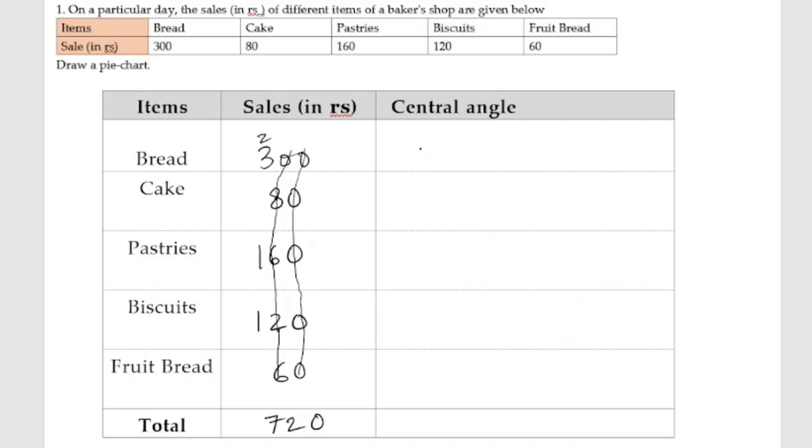Two plus three is five, five plus one is six, six plus one is seven. So the total is 720. Now we need to find out the angle. To find out the angle, first we will take this amount, 300 by the total amount 720. We know that in a circle, a circle forms 360 degrees angle.